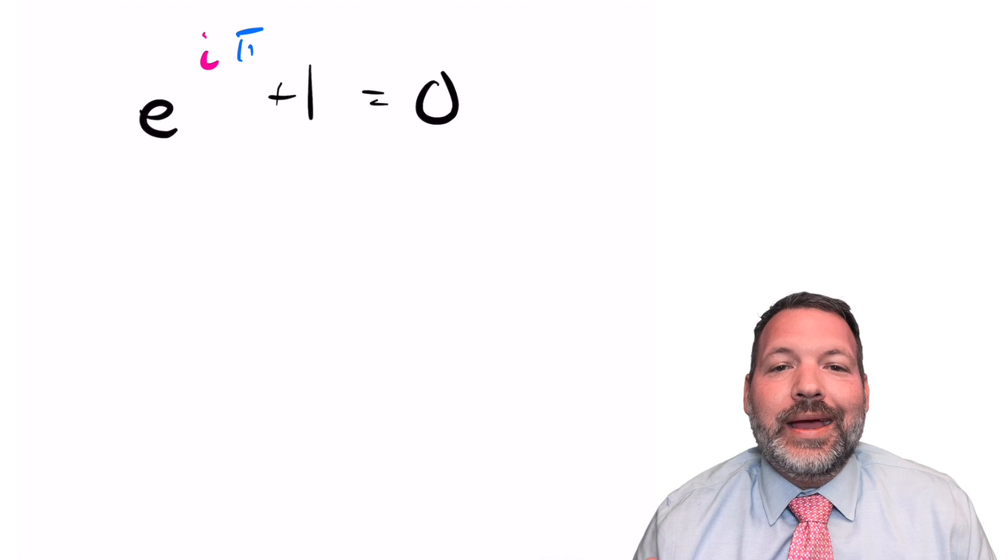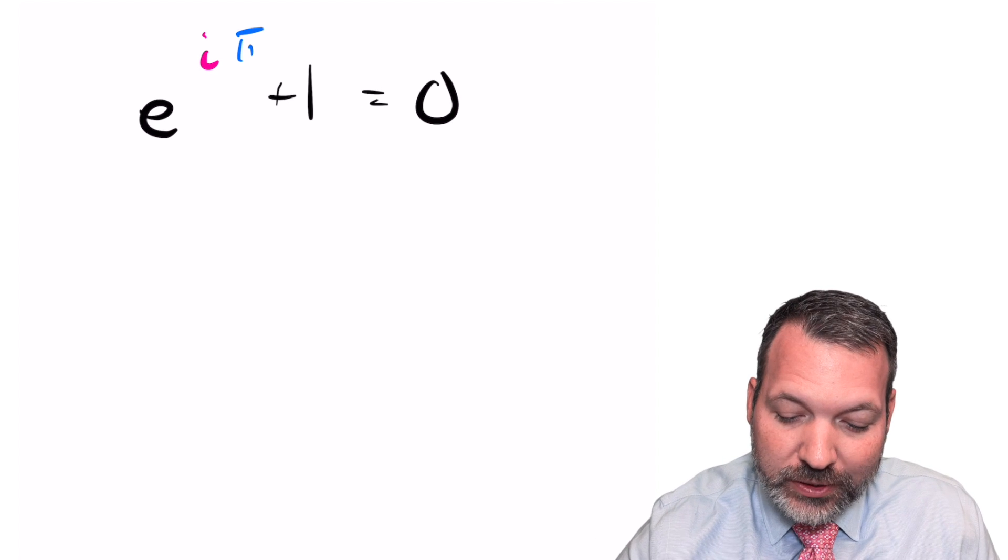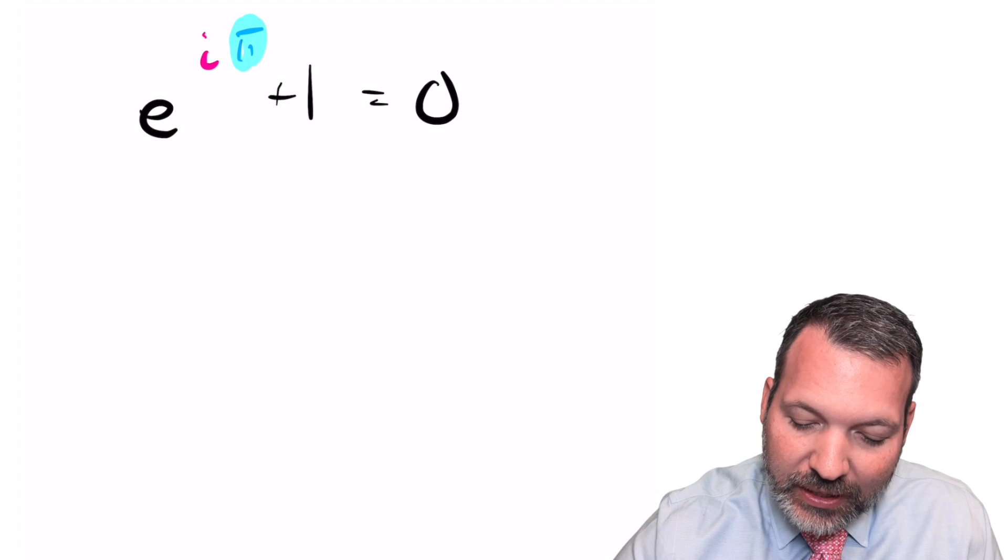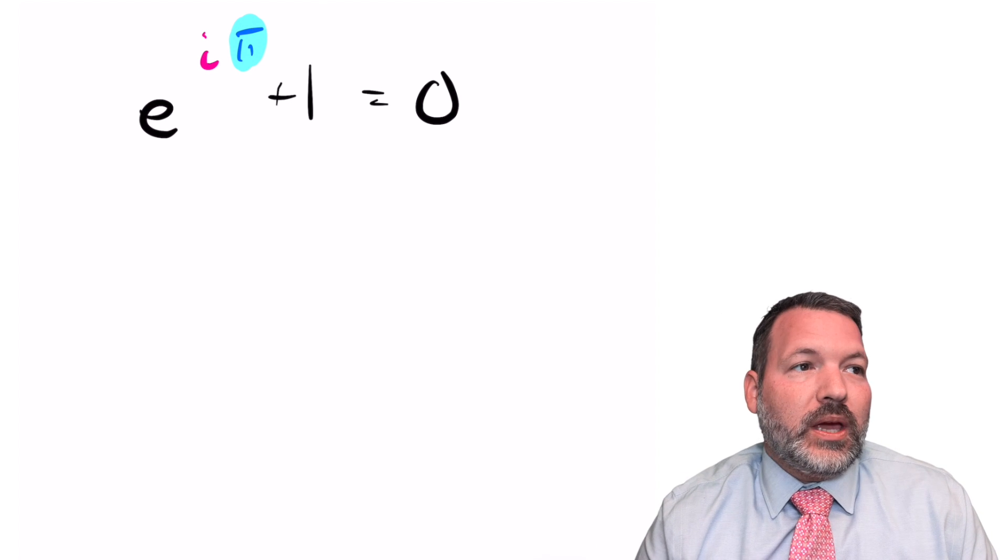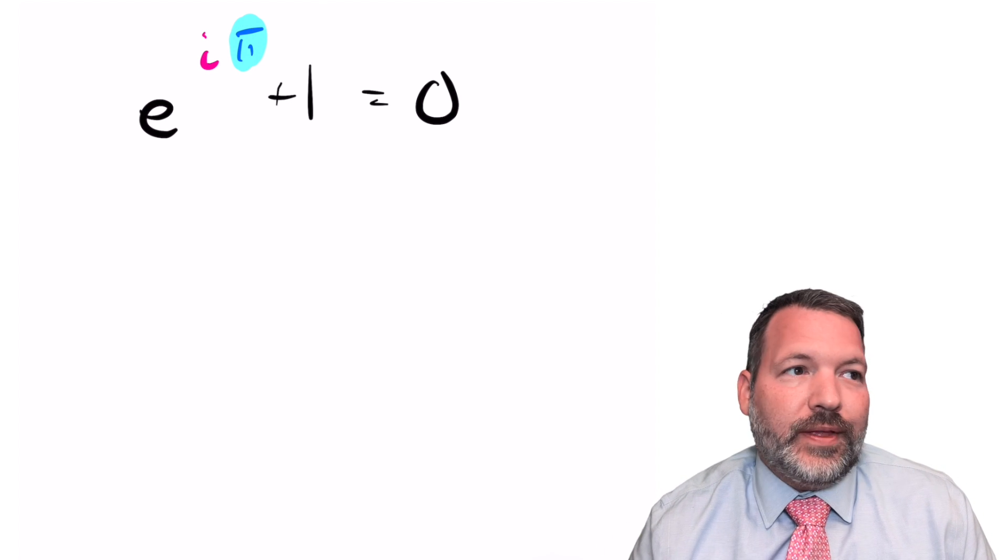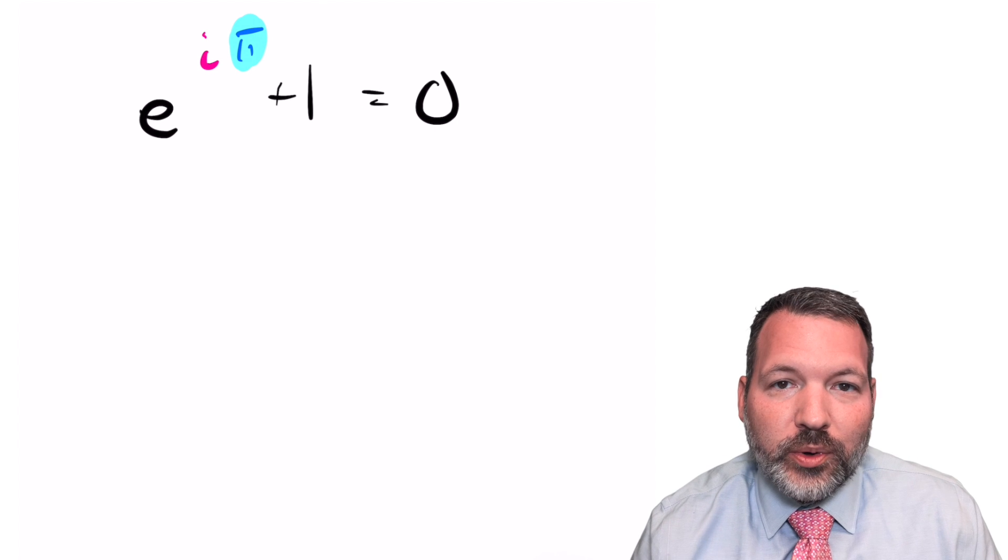And then of course e, i, and pi all represent different fields of mathematics. Pi gives us that connection between a circle's diameter and its circumference, but really it becomes the source of all of our angles and then trigonometry and things that we can do with polygons.